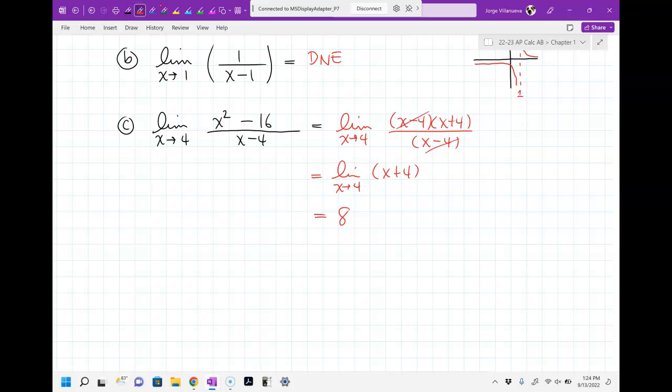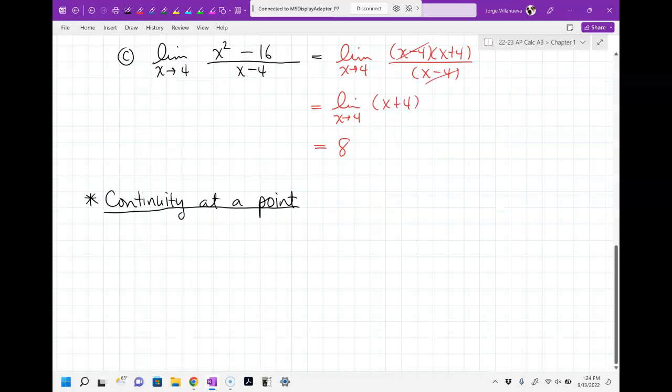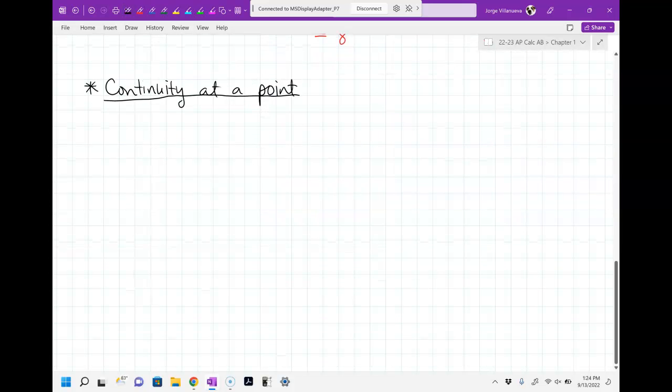All right. So back of the test, I'm going to ask you for continuity at a point. Continuity at a point. Now, this is something you guys have to have memorized. Make sure you have this memorized. There are three steps to checking for continuity at a point. Does the point exist? That's step one. Does the limit exist at that point? And is the point existence the same as the limit existence? Like, are they the same value? Those are three steps.